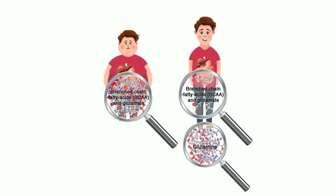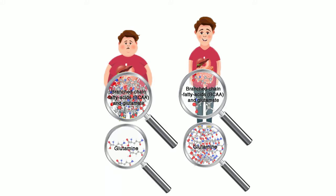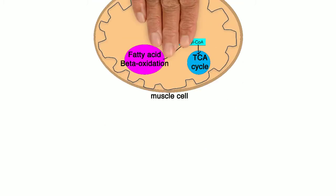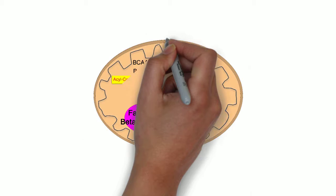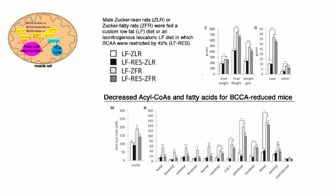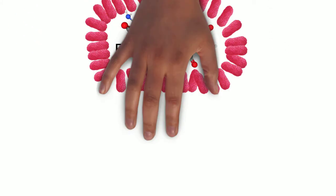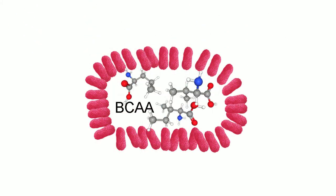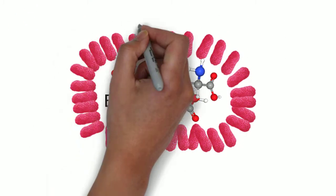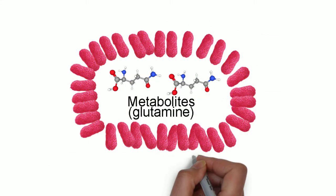Glutamine, on the other hand, is found in greater abundance in lean humans than obese humans. BCAA overload in the skeletal muscles interferes with the complete oxidation of fatty acids, leading to accumulation of fatty acyl-CoA. Bt can ferment those obesity-inducing BCAAs into metabolites such as glutamine.